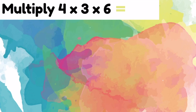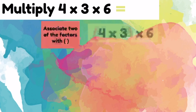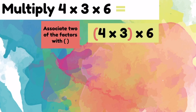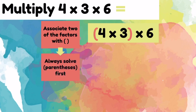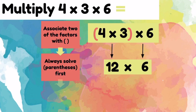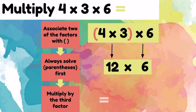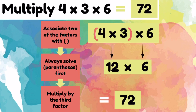4 times 3 times 6. Let's associate 2 of our factors with parentheses: 4 times 3. Let's solve parentheses first. 4 times 3 equals 12. Let's bring down the times 6. So now we'll multiply by the third factor, which was the 6. 12 times 6 equals 72. So 4 times 3 times 6 equals 72.